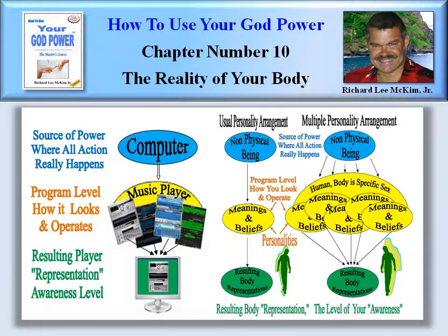Now, that's very much like the computer illustration we just saw. Where you have the computer, which is the source of all power, where all action really happens. Then you have your major main program — in the computer example, it was a music player; in this example, it's a human male body. Then you have the next level, which are the meanings and beliefs, which are how that main program is going to be represented. That particular group of meanings and beliefs is elicited, activated, and in force — then being the major source of what the represented body is going to be. It presents the body based on how it knows the body to be, and each one of those different personalities presents, represents, creates a different body.